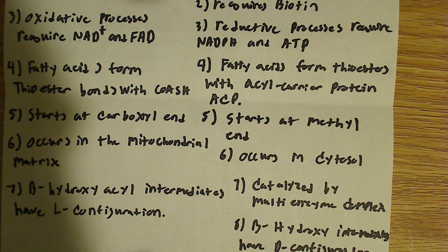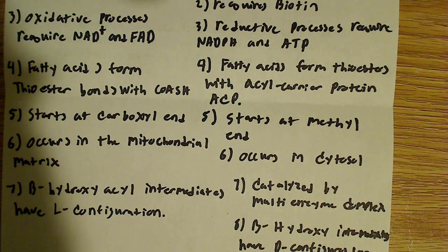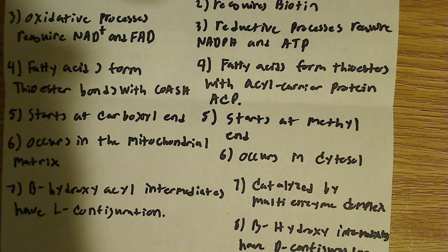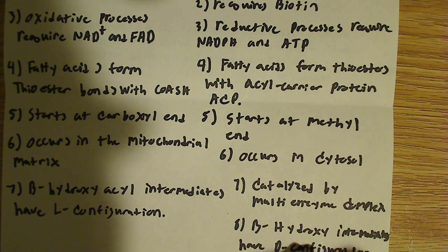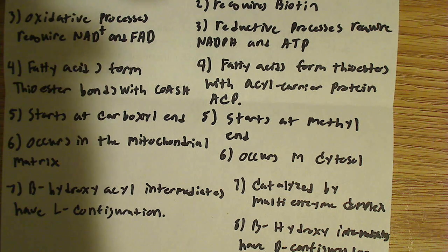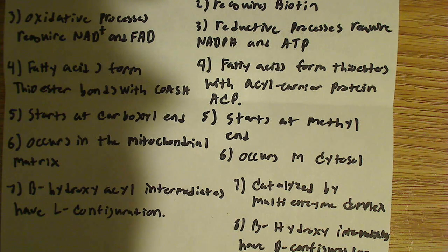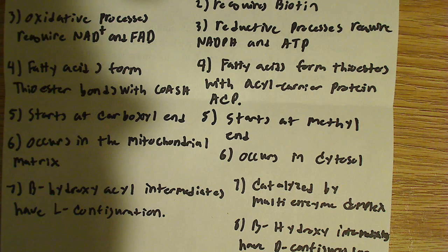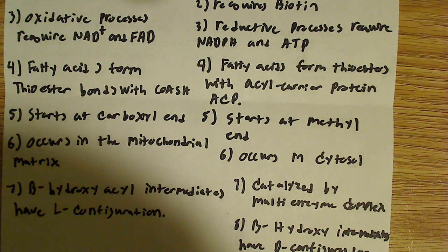Finally, under the degradation list, beta-hydroxyacyl intermediates have an L configuration. In the biosynthesis process, beta-hydroxy intermediates have the D configuration, so they have opposite configurations. Additionally, biosynthesis is catalyzed by a multi-enzyme complex.